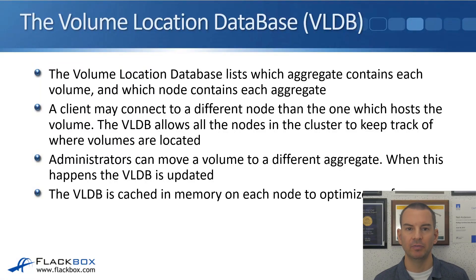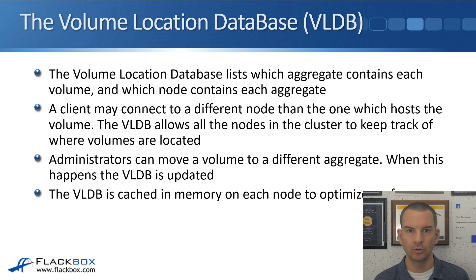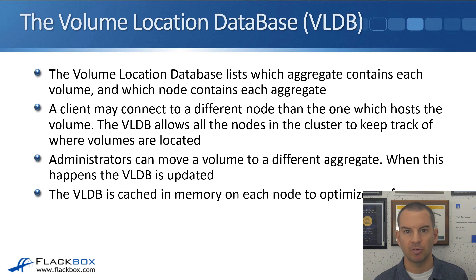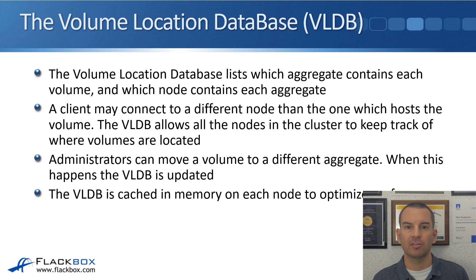Next is the volume location database, the VLDB. It lists which aggregate contains each volume and which node contains each aggregate. A client might connect to a different node than the one which hosts the volume. For example, say we have a four-node cluster with a volume on node 1 that a client is going to connect to. We don't just configure an IP address on node 1 — we'll actually configure an IP address on all four nodes in the cluster. That's best practice. We load balance the incoming connections across all four nodes for better performance. So if a client hits node 4 and wants to access a volume on node 1, node 4 needs to know where that volume is — that's what the VLDB is used for.